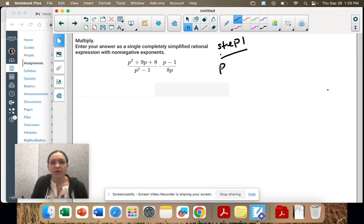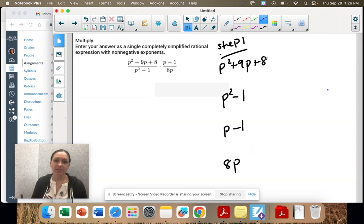So p squared plus 9p plus 8, p squared minus 1, p minus 1, and 8p. Let's see what we can factor. Our first one we can definitely factor. It's three terms, it's going to create two big factors. To do that, that's 1p squared, so it's the easy way. Look at all the numbers that multiply to 8. So 2 times 4 and 8 times 1.